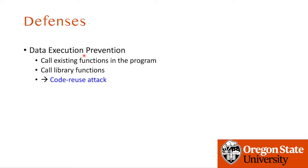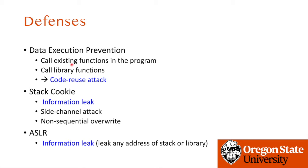We have learned two other defenses: stack cookie and ASLR, and they both require us to obtain information about a random secret that each defense sets. For stack cookie, if we can leak the cookie value itself, or apply a side channel attack to learn the random value, then we can bypass the defense. Or we can skip the cookie by overriding our data with a non-sequential override.